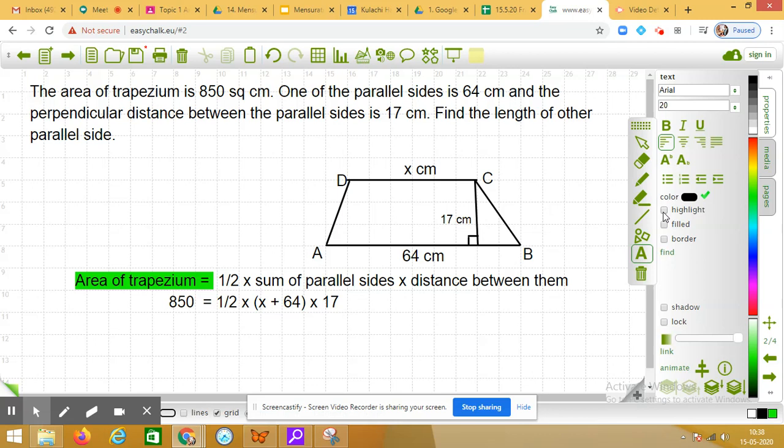Ma'am, it will be 850 equals to 17 upon 2 bracket x plus 64. Okay fine. I am writing that 850 is equal to 17 upon 2 into x plus 64.